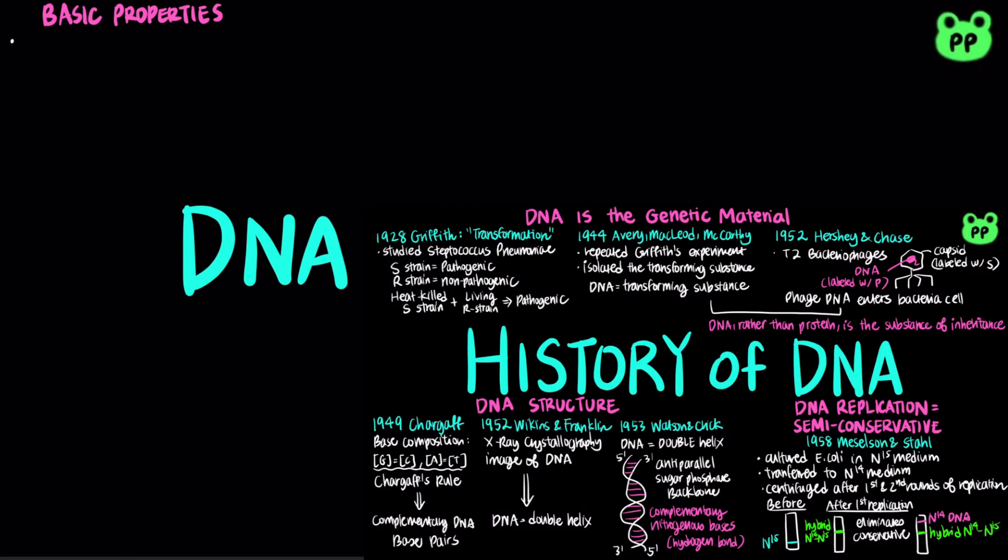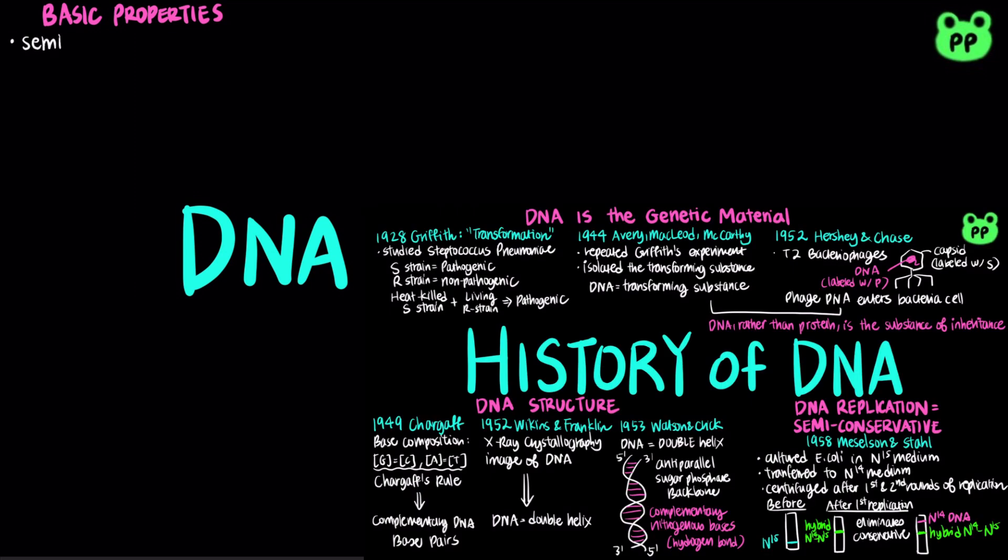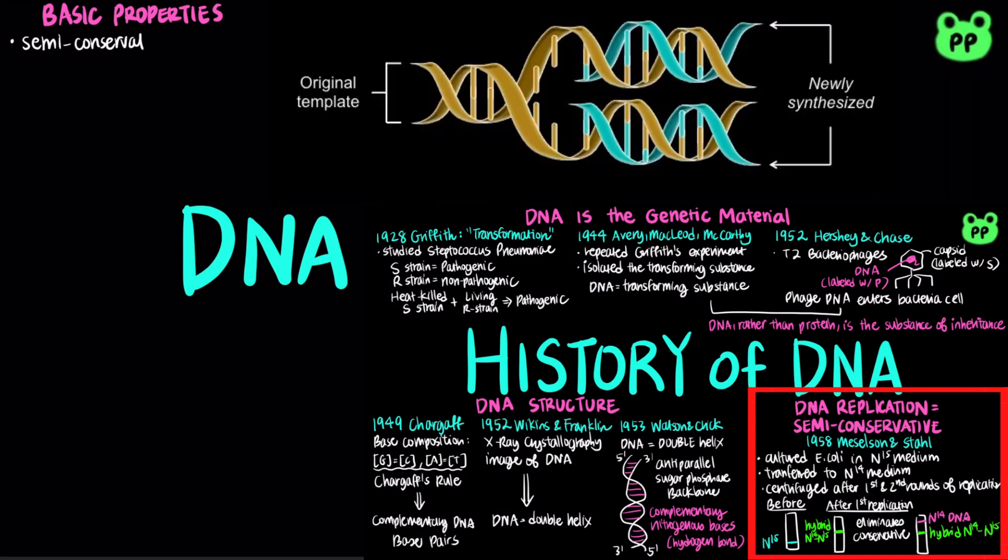In my previous video titled History of DNA, I covered the Meselson and Stahl experiment which showed that DNA replication is semi-conservative, meaning that the two parental strands separate and each function as a template for synthesis of a new complementary strand.